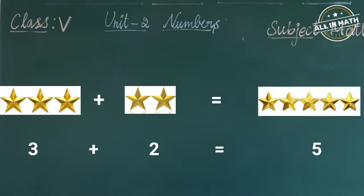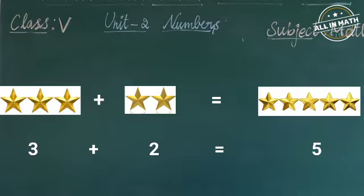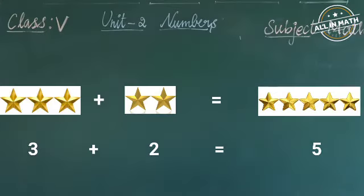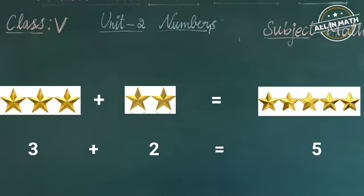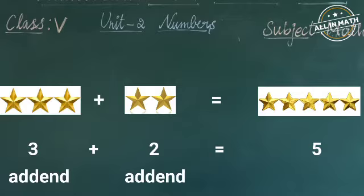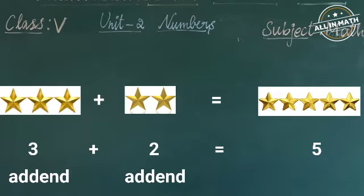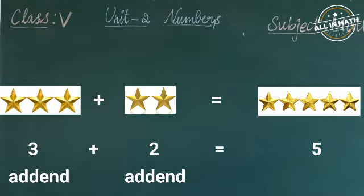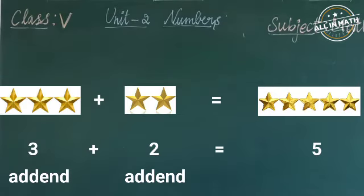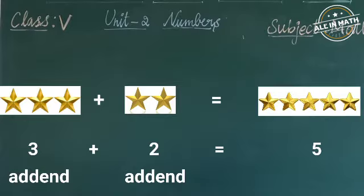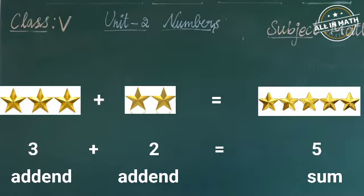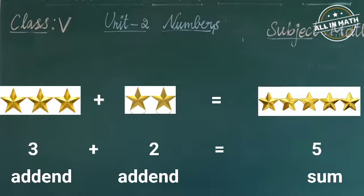The sign used for addition is called plus. The numbers to be added together are called the add-ons. Here, 3 and 2 are add-ons. And the answer we get after adding the numbers is called the sum. Here, 5 is the sum.